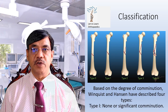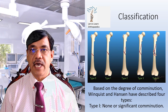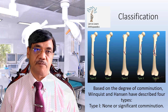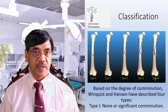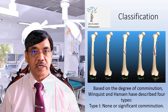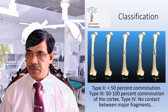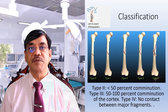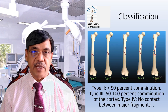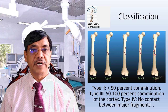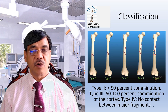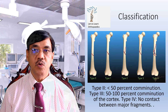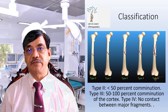Based on the degree of comminution, Winquist and Hansen have described four types. Type 1: none or insignificant comminution. Type 2: less than 50% comminution. Type 3: 50 to 100% comminution of the cortex. Type 4: no contact between the two major fragments.